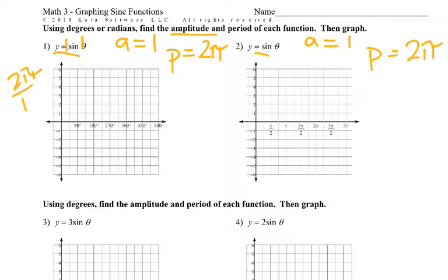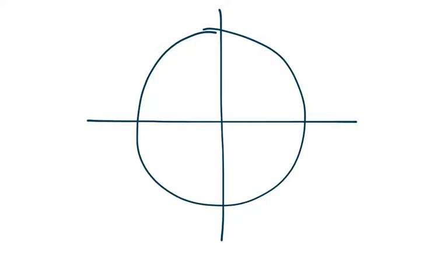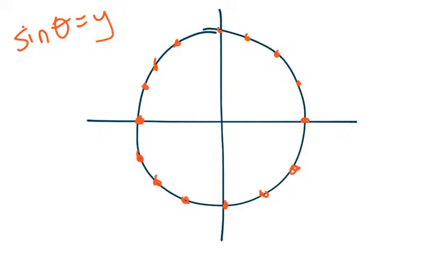Remember that with the sine function, it's related to the unit circle. If we have the unit circle, the sine values are the y-values. Thinking about those y-values at those important special angles helps us see how it's all connected. When doing a sine function, we want to use 5 points. We like to start at zero, which is the y-axis, where the y-value is also zero. So at zero degrees or zero radians, the y-value is zero.